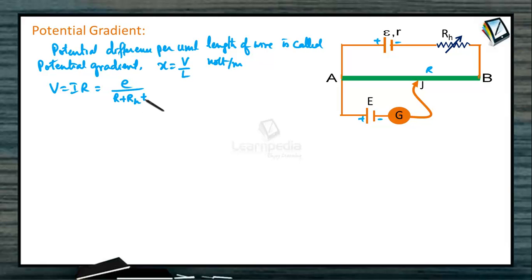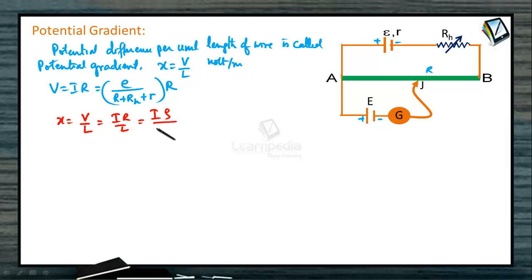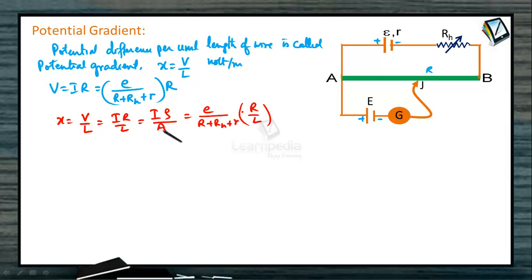The total resistance is R plus the rheostat resistance RH plus internal resistance small r. Therefore, X = IR / L = I·rho·L/A divided by L = I·rho / A. This can also be written as X = [E / (R + RH + r)] × (R / L). Potential gradient directly depends on resistance per unit length of the potentiometer wire, and inversely depends on the EMF of the battery and the resistance of the rheostat in the primary circuit.